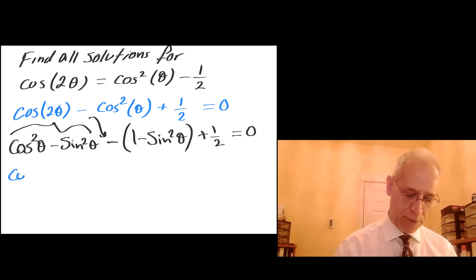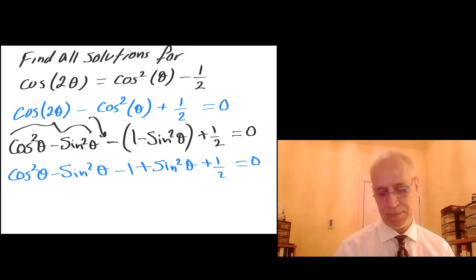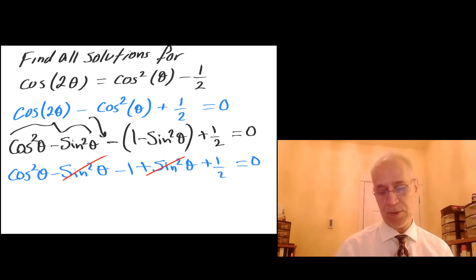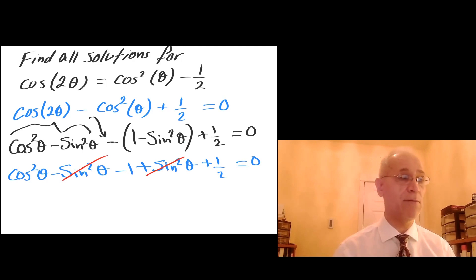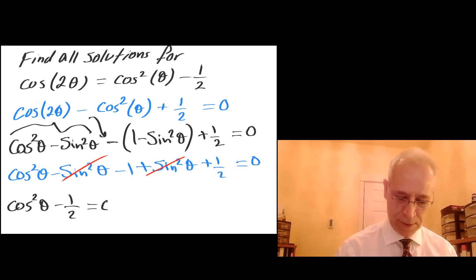Expanding: cosine squared of theta minus sine squared of theta minus one plus sine squared of theta plus one half equals zero. The sine squared terms cancel, and combining negative one with positive one half, I'm left with cosine squared of theta minus one half equals zero.